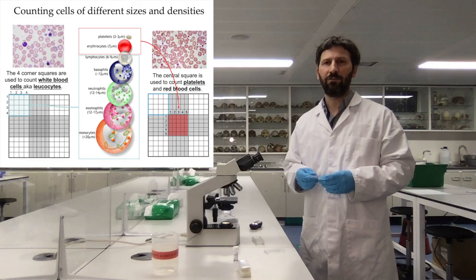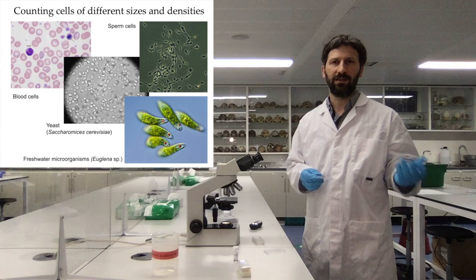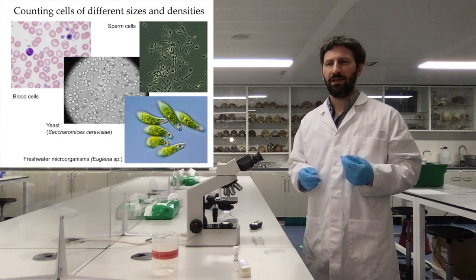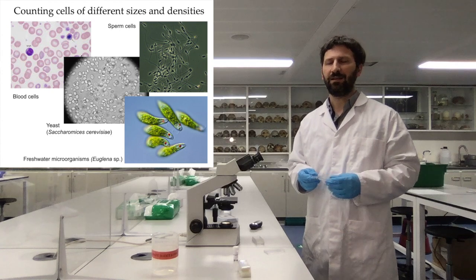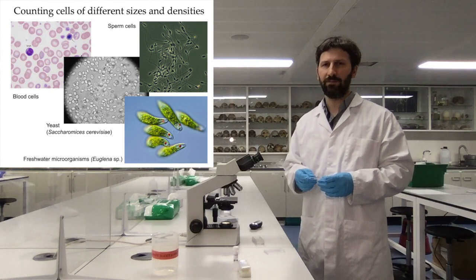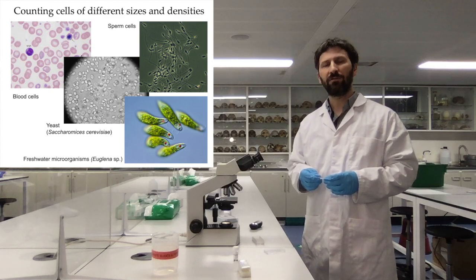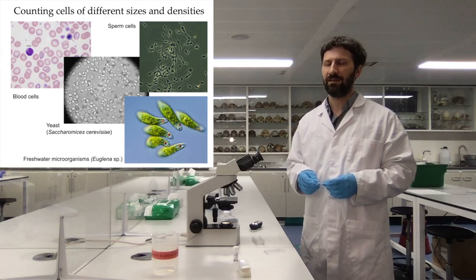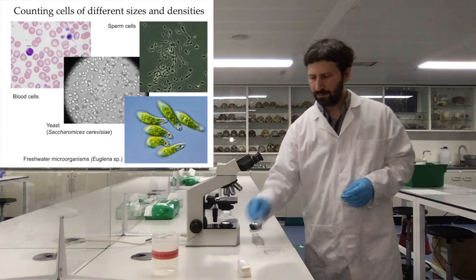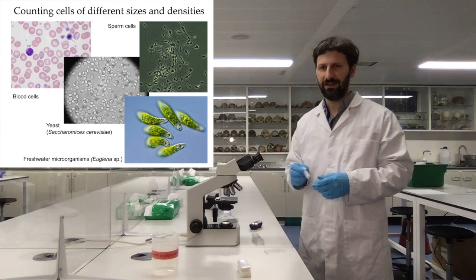But we can also count other types of cells — for instance, yeast if you work in a brewery, or sperm cells if you work in a fertility clinic. Today we are actually using the hemocytometer for something else, as we are going to count a different type of cells: some unicellular organism known as Euglena, Euglena gracilis.